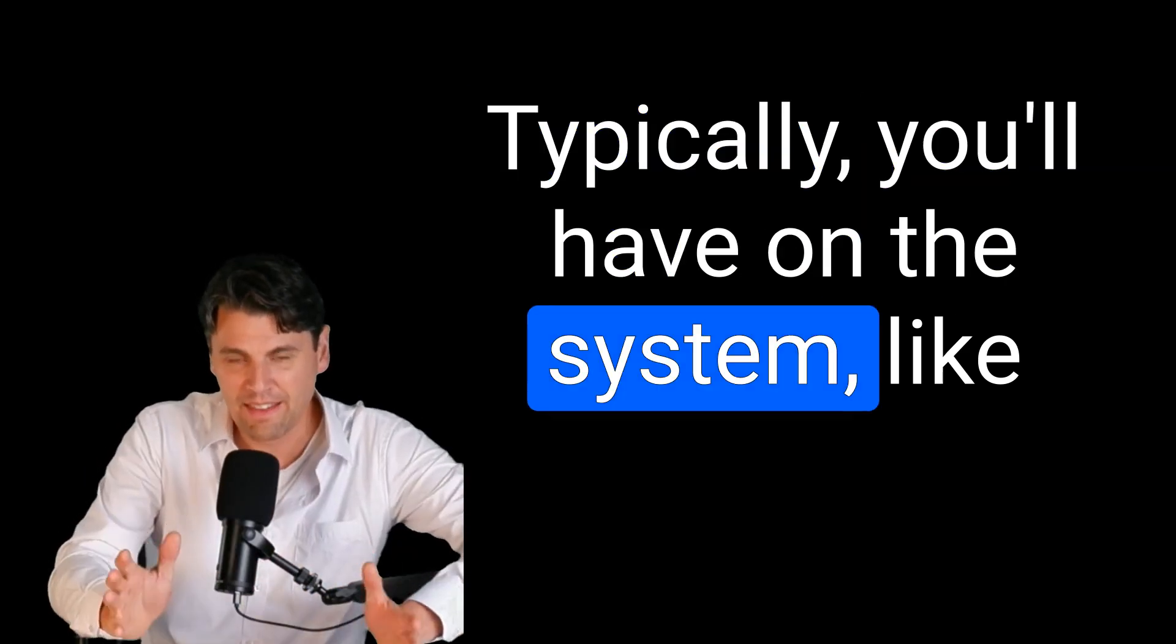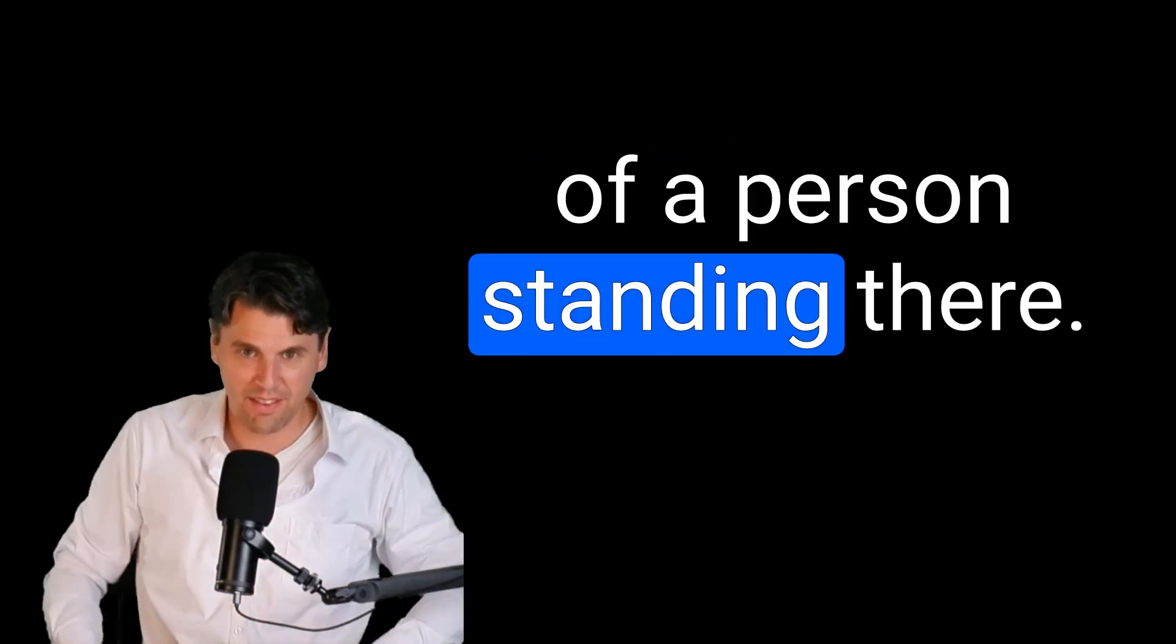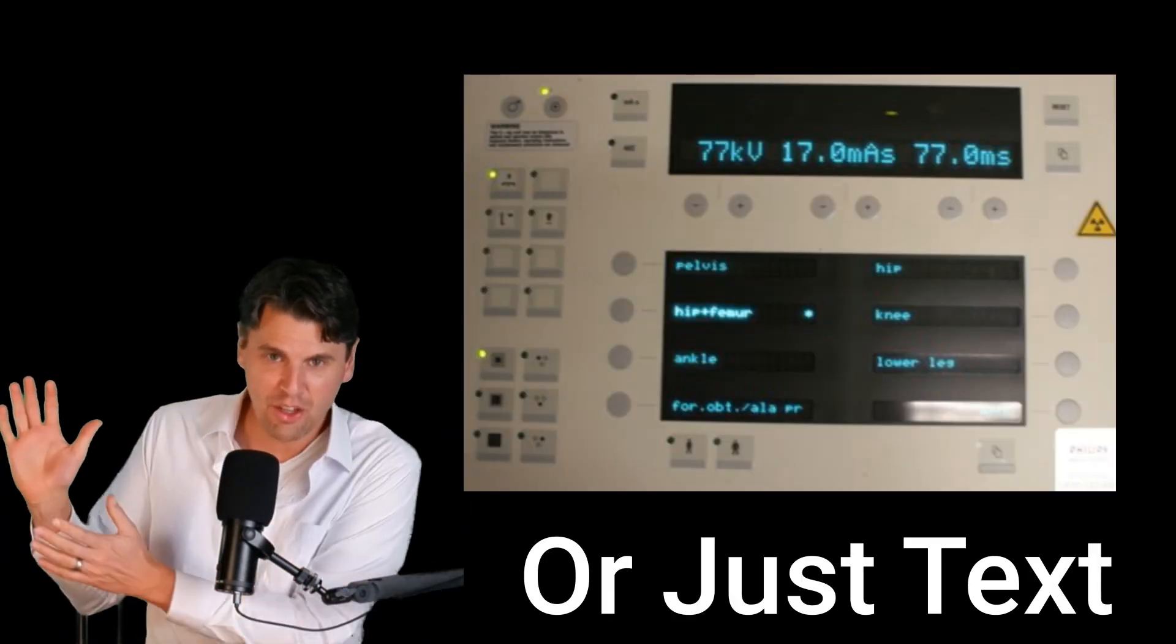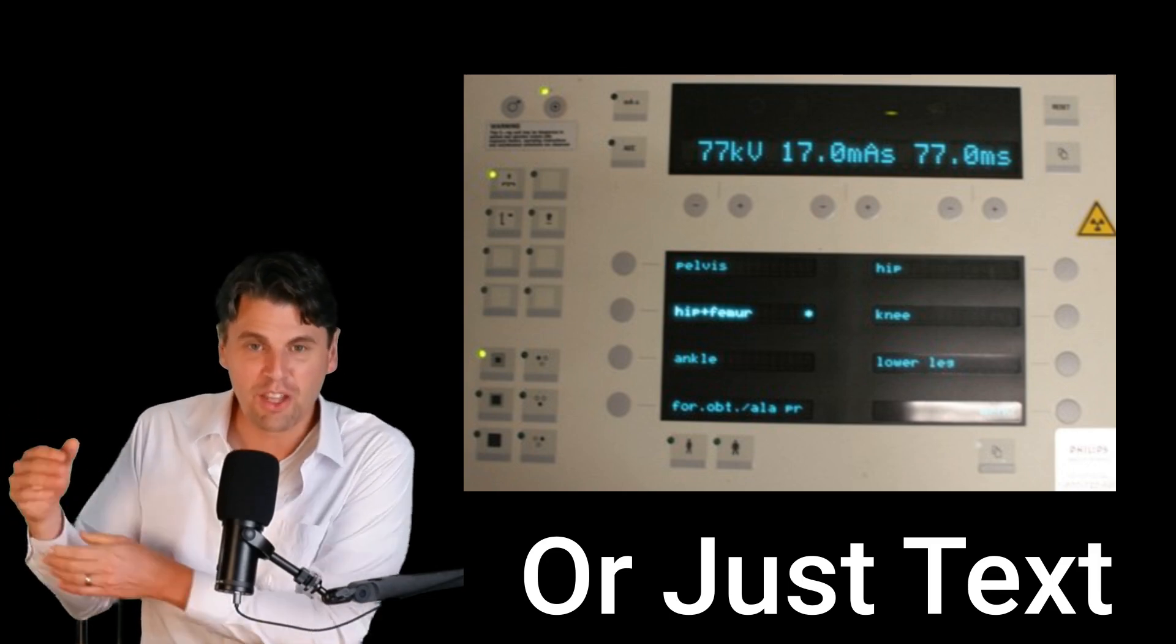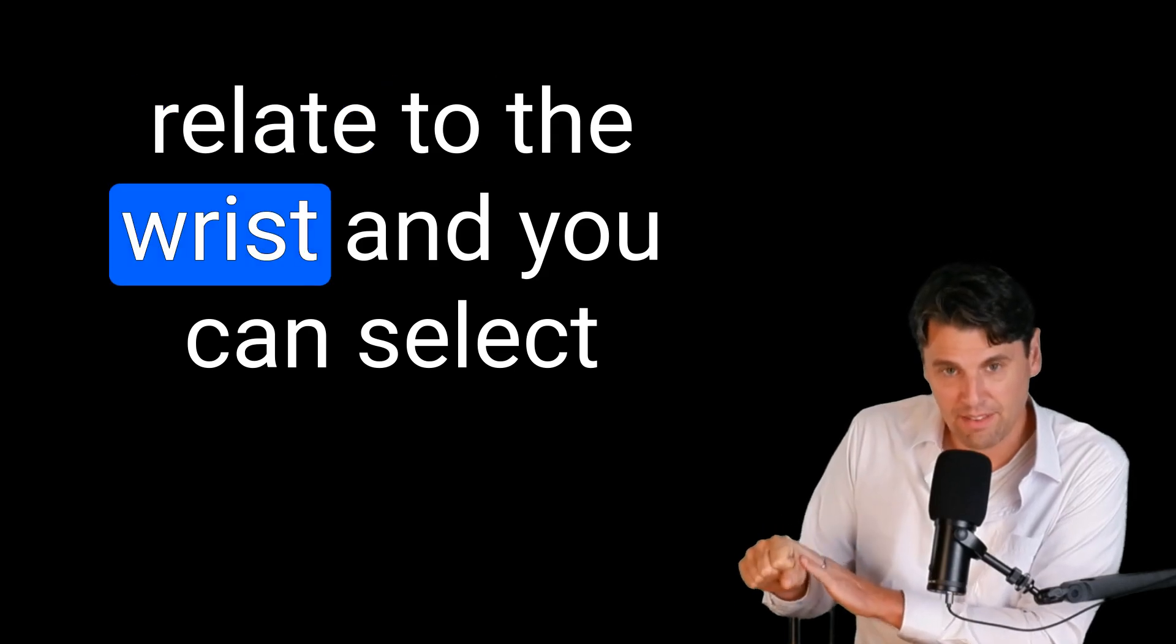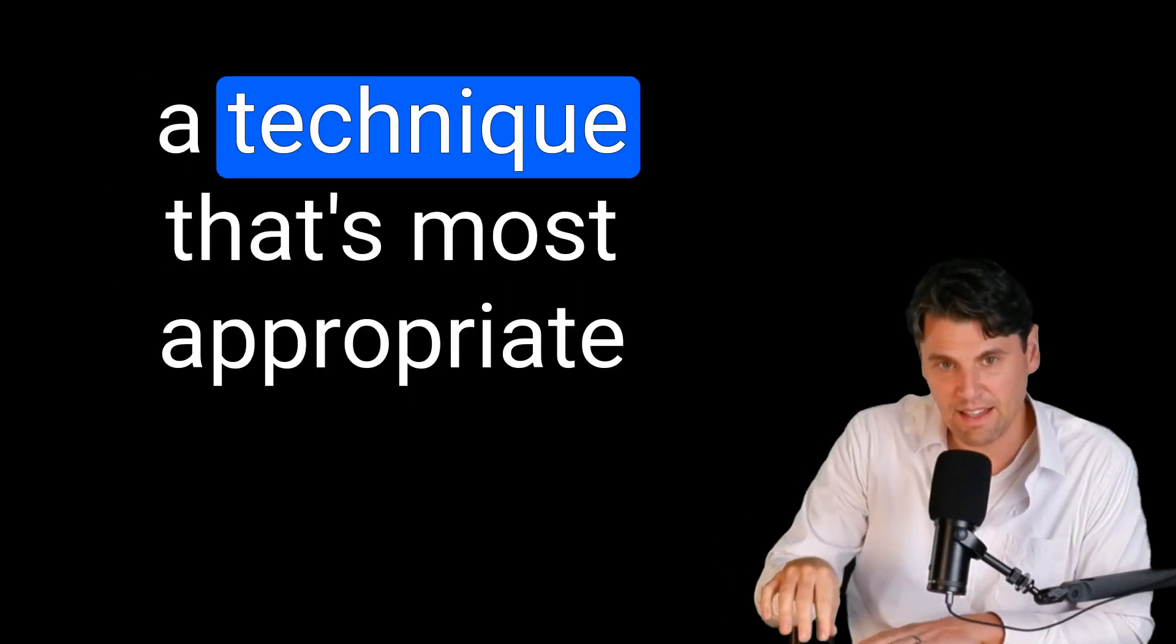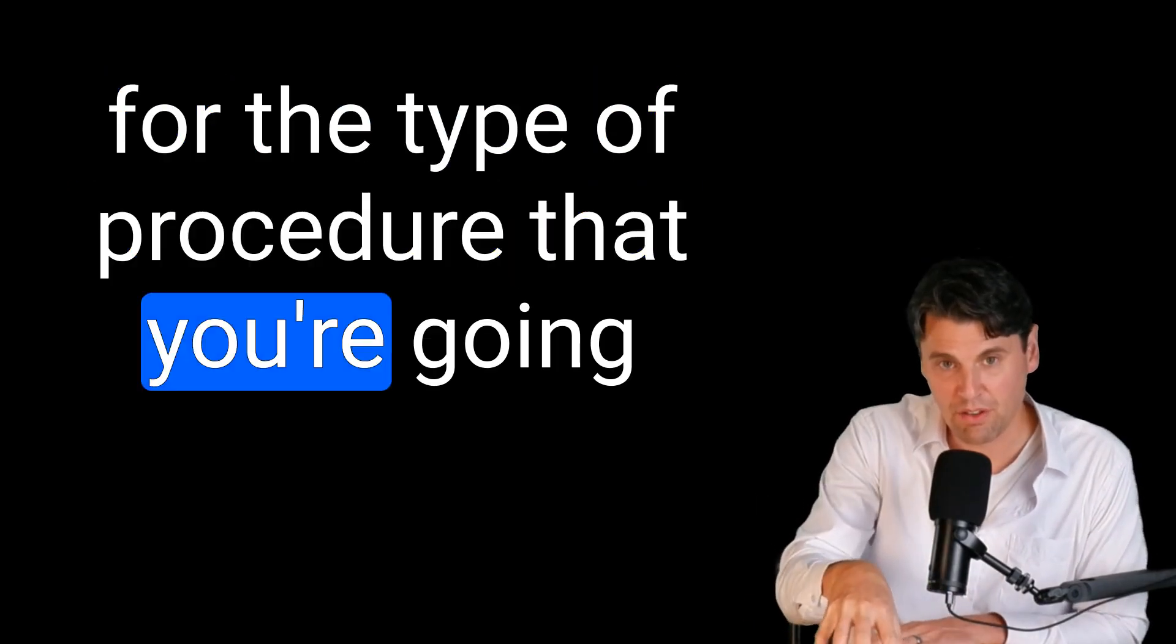Typically, you'll have on the system a graphical representation of a person standing there, and then you could click on that person. And if you click on the wrist, you'll get a set of techniques related to the wrist, and you can select a technique that's most appropriate for the type of procedure that you're going to be doing.